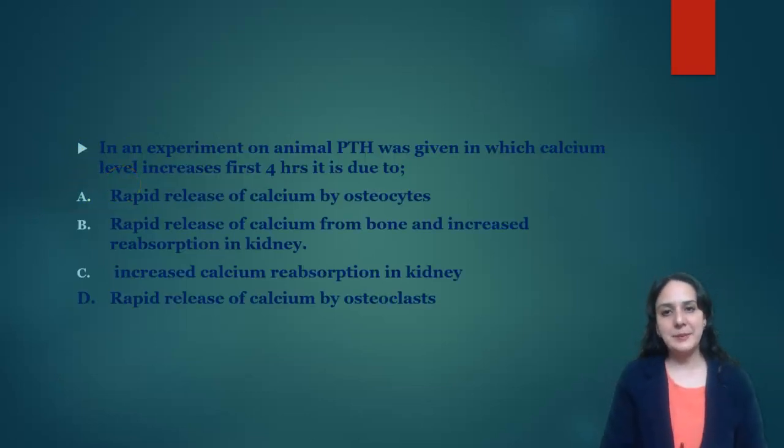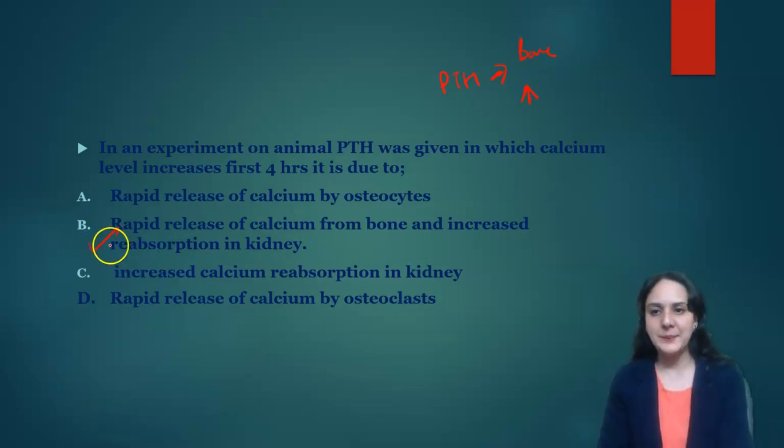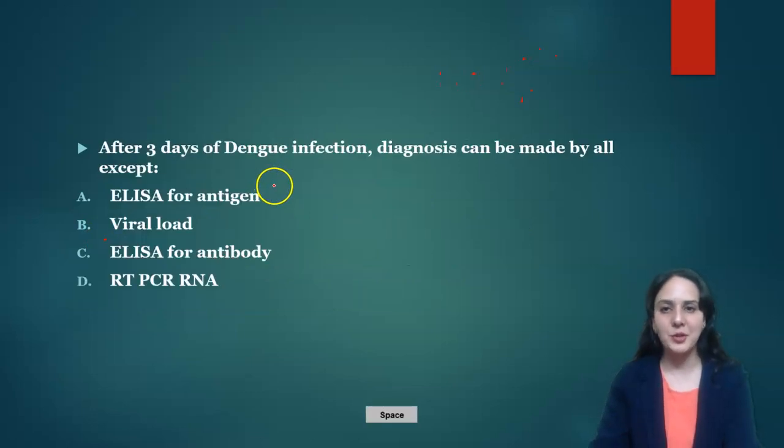Next is: in an experiment parathyroid hormone was given to animal which increases calcium levels for first four hours. Now what is the role of parathyroid hormone? It increases release of calcium from bones as well as increases reabsorption of calcium from kidneys to maintain calcium levels. So answer is B, that is rapid release from calcium from bone and increase reabsorption from kidney.